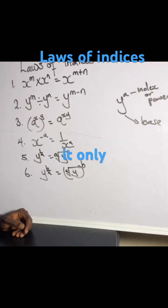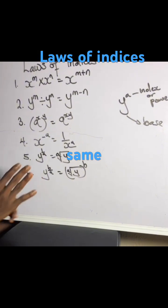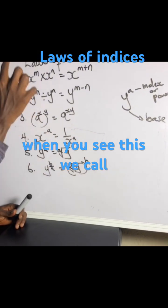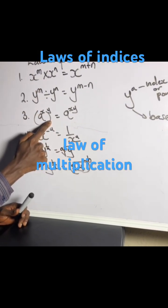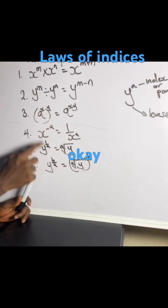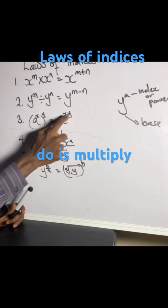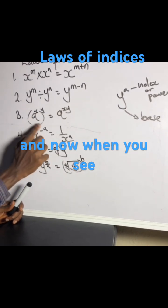When you see this, we call it the indices law of multiplication. All you gotta do is multiply the powers.